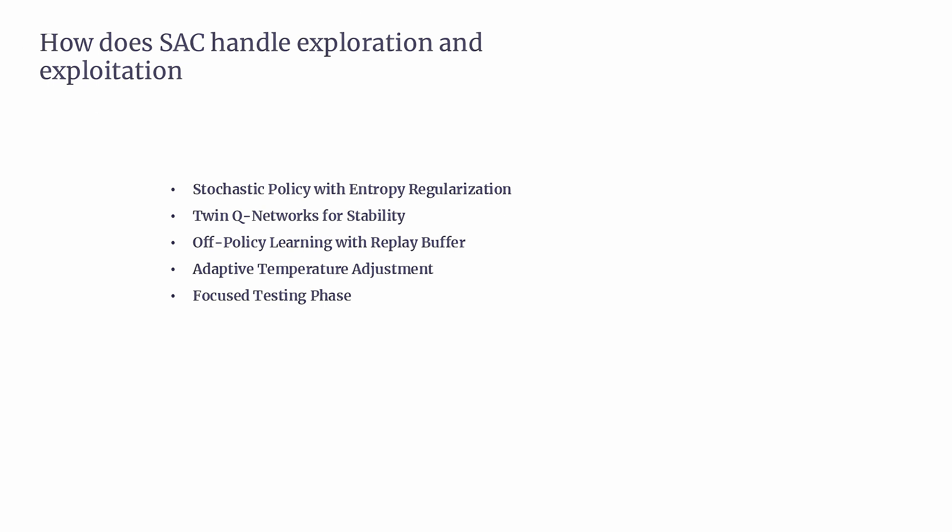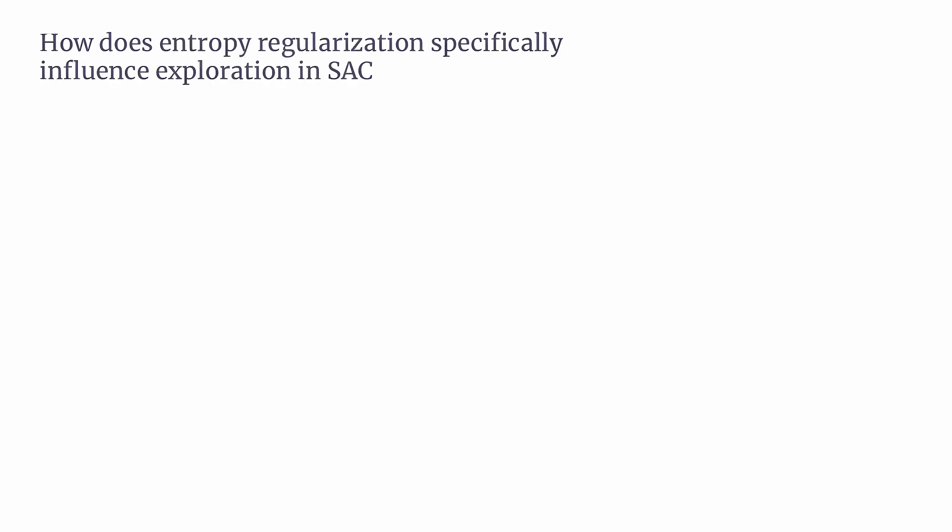In summary, Soft Actor-Critic excels in reinforcement learning by effectively balancing exploration and exploitation through entropy regularization, stable value estimation with twin Q-networks, and sample-efficient off-policy learning. Its adaptive temperature tuning and strategic evaluation adjustments further enhance flexibility and robustness, making it an ideal choice for tackling complex, continuous control problems with stability and efficiency. Entropy regularization is a key component in SAC, playing a vital role in encouraging exploration.